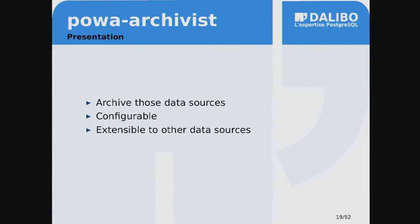To glue all of this together, since those extensions only provide cumulative values, we need a way to historize the data and determine exactly what happened during a specific timeframe. For this we have POWA Archivist — a background worker that periodically polls these data sources. The frequency is configurable and it automatically manages a data retention policy. For example, you can keep one week of statistics. It's also extensible: if you have other things to monitor, you can extend it by writing a few PL/pgSQL functions.